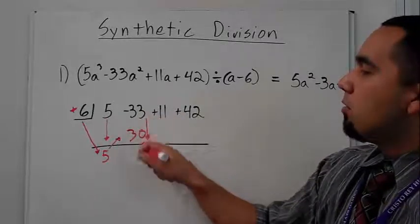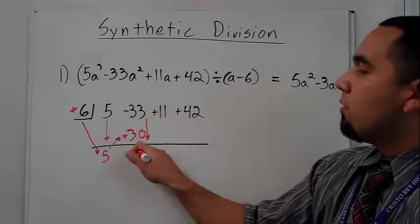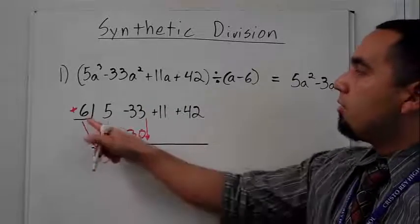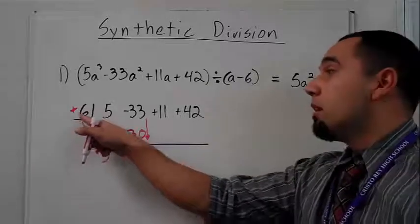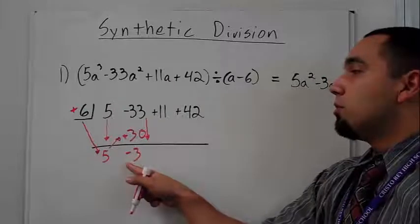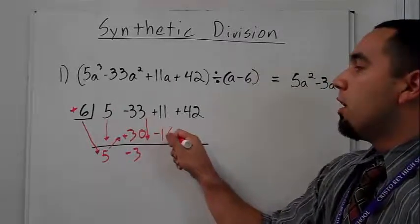So six times five is 30, and then we add when we go down. So I'm going to add going down. So if I add these two numbers together, I get negative three. And then I do the same exact thing again. So I am taking my six, and I'm multiplying times negative three.